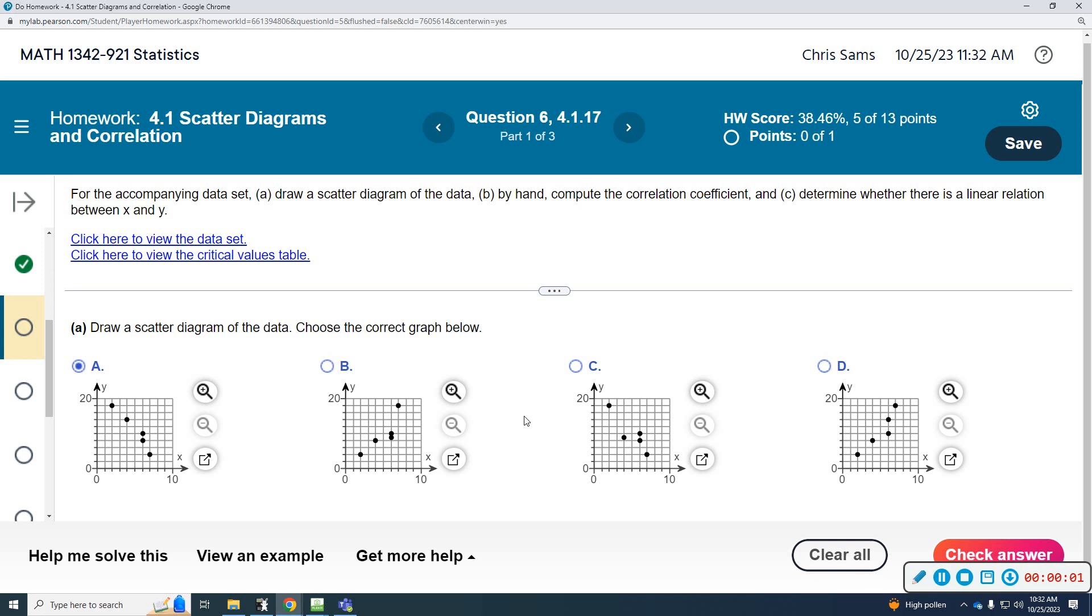All right, question number six. It says, for the accompanying data set, we want to draw a scatter diagram. And it says, by hand, compute the correlation coefficient. And it says, determine whether there is a linear relationship between X and Y.